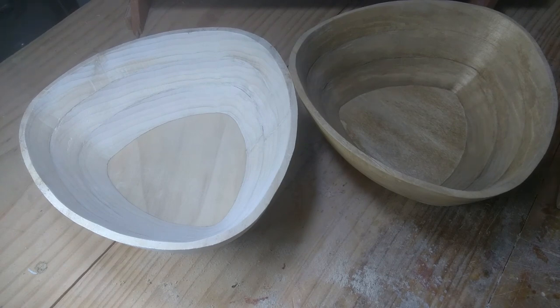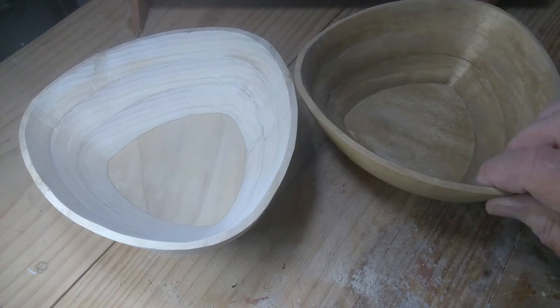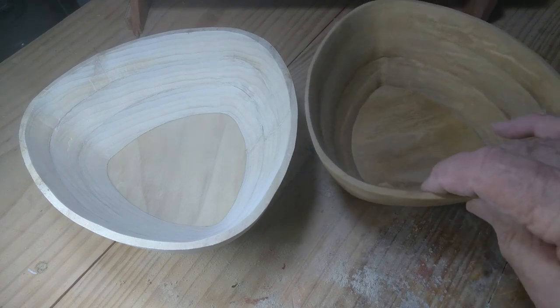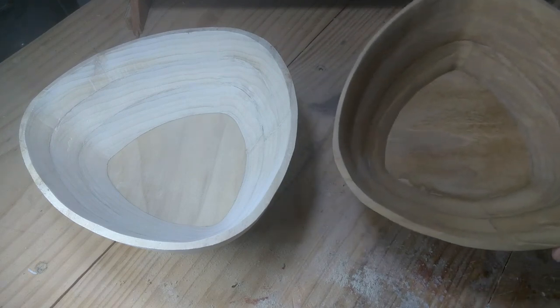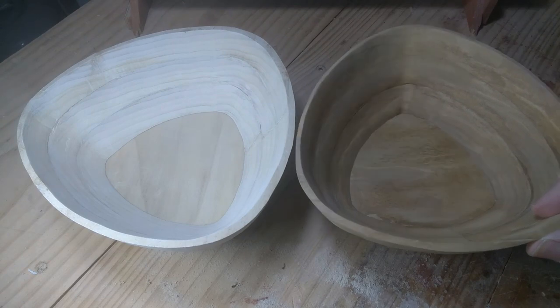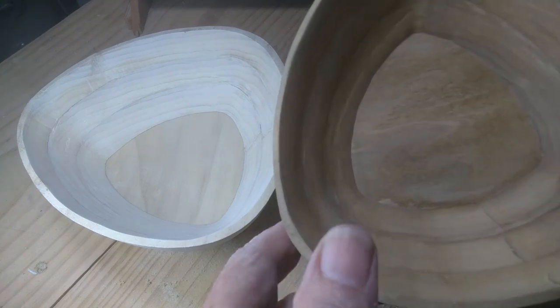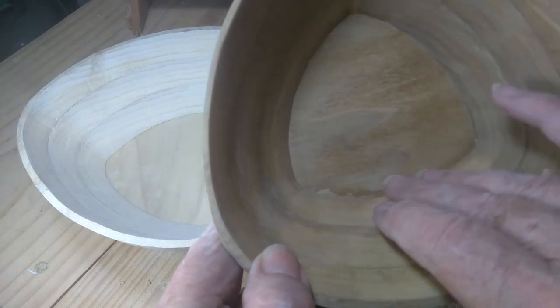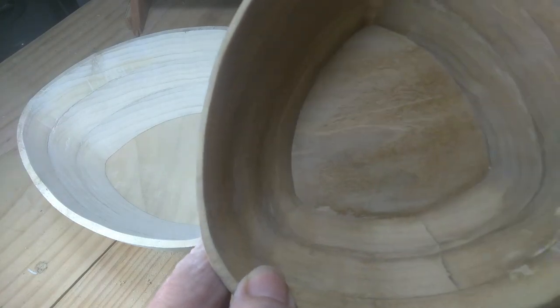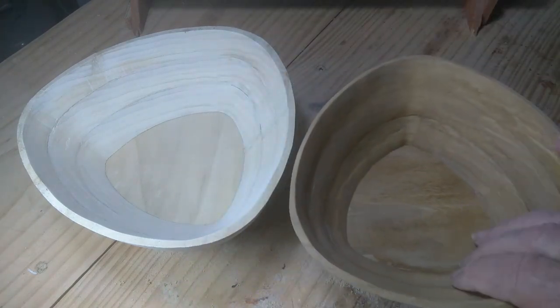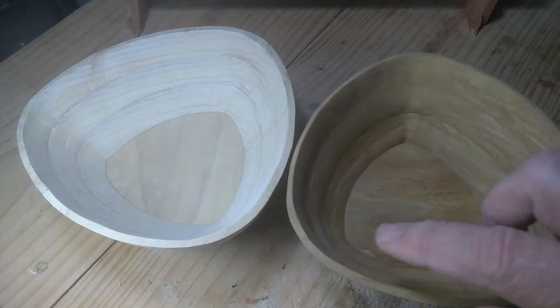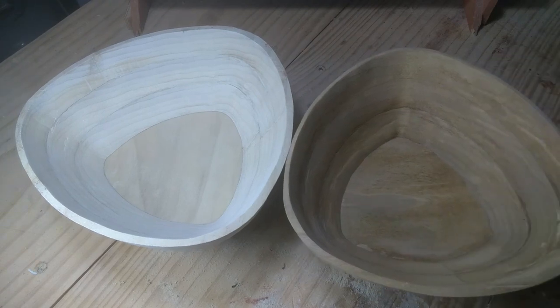This is called a wonder bowl because it's equidistant anywhere you measure it. There's a name for that. It's a triangle with a specific name. I forget what it is. I'll look it up and have it in the description. But as you can see, it's almost triangular shape except it's curved sides. And the wonder of it is, you measure it across directly anywhere on it, it's the same distance. Everywhere you look, directly across from each other.